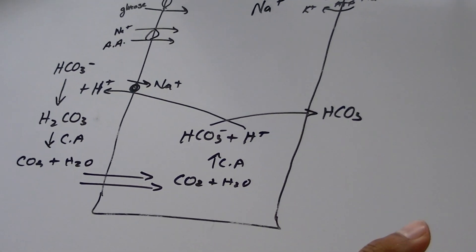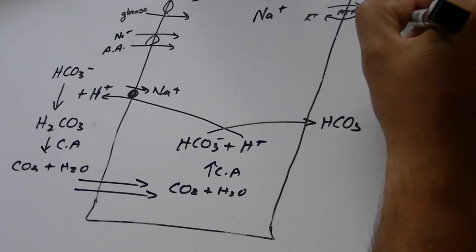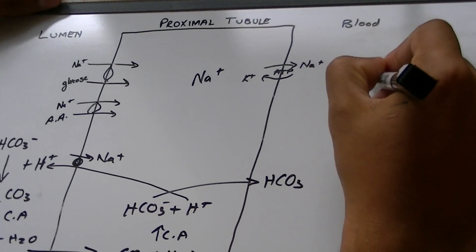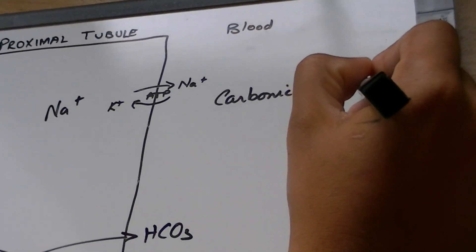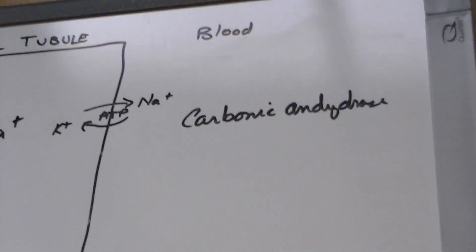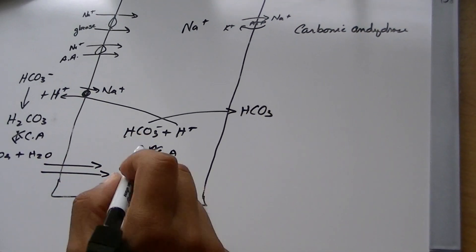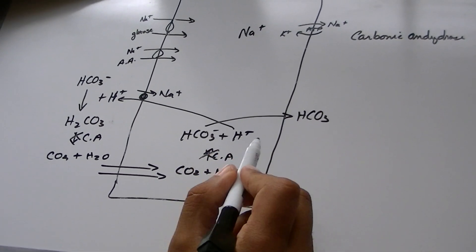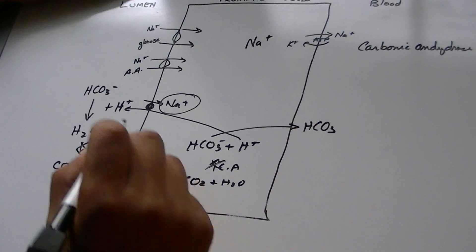Now, there is a drug that we use as a diuretic, which is called carbonic anhydrase inhibitor. What it does is, it inhibits the carbonic anhydrase.